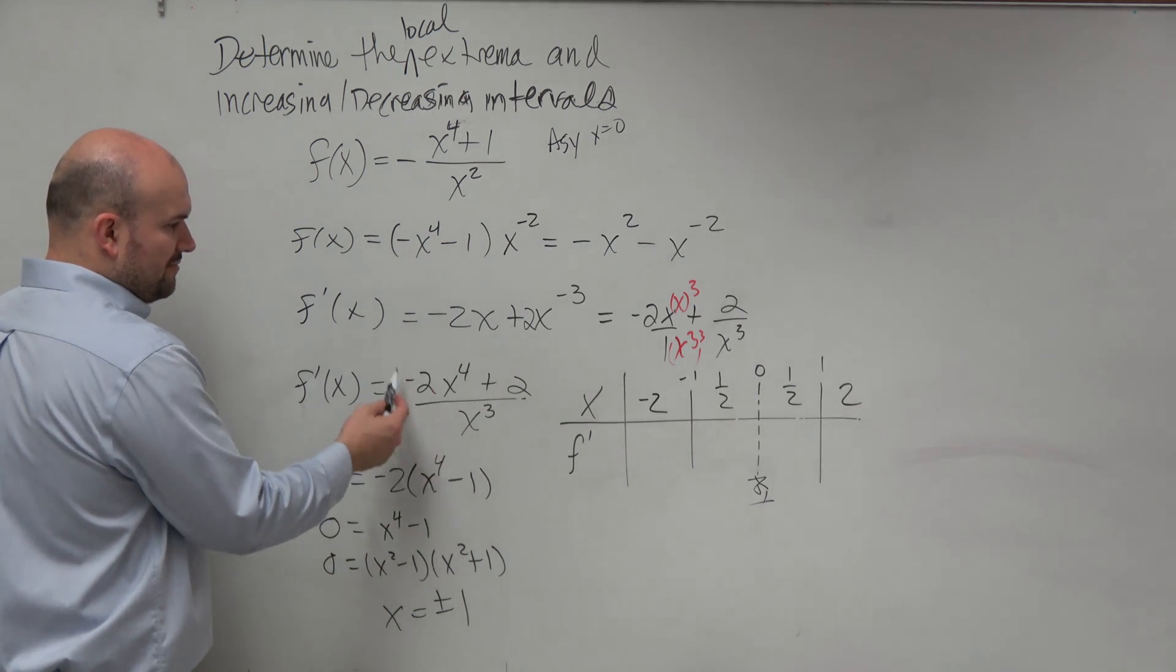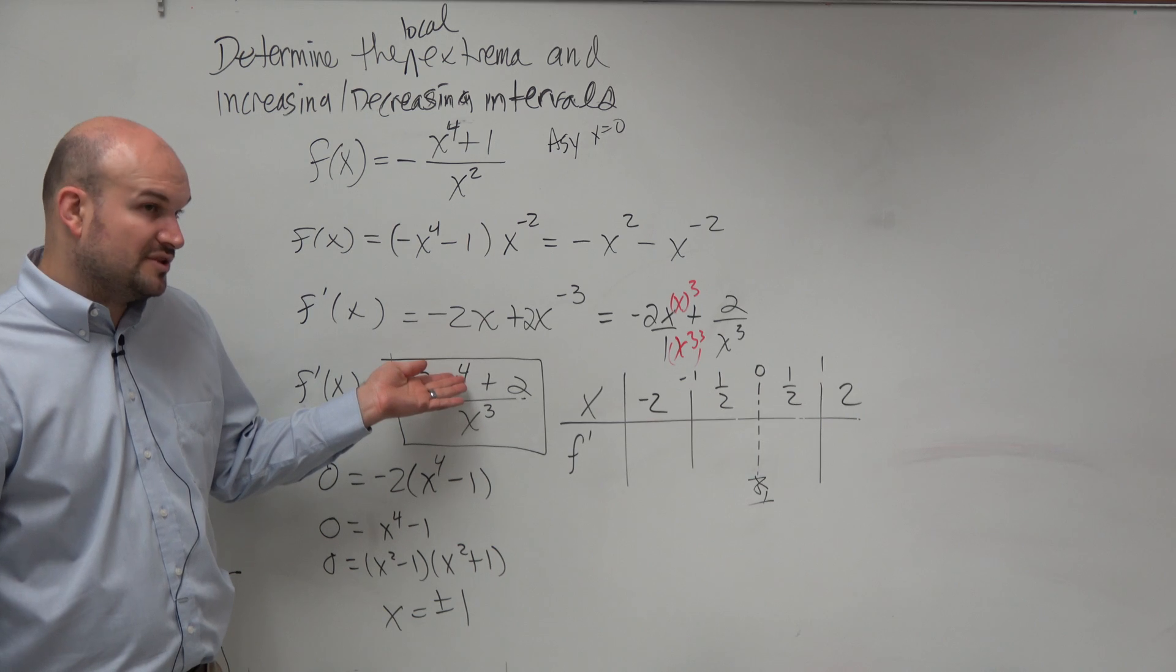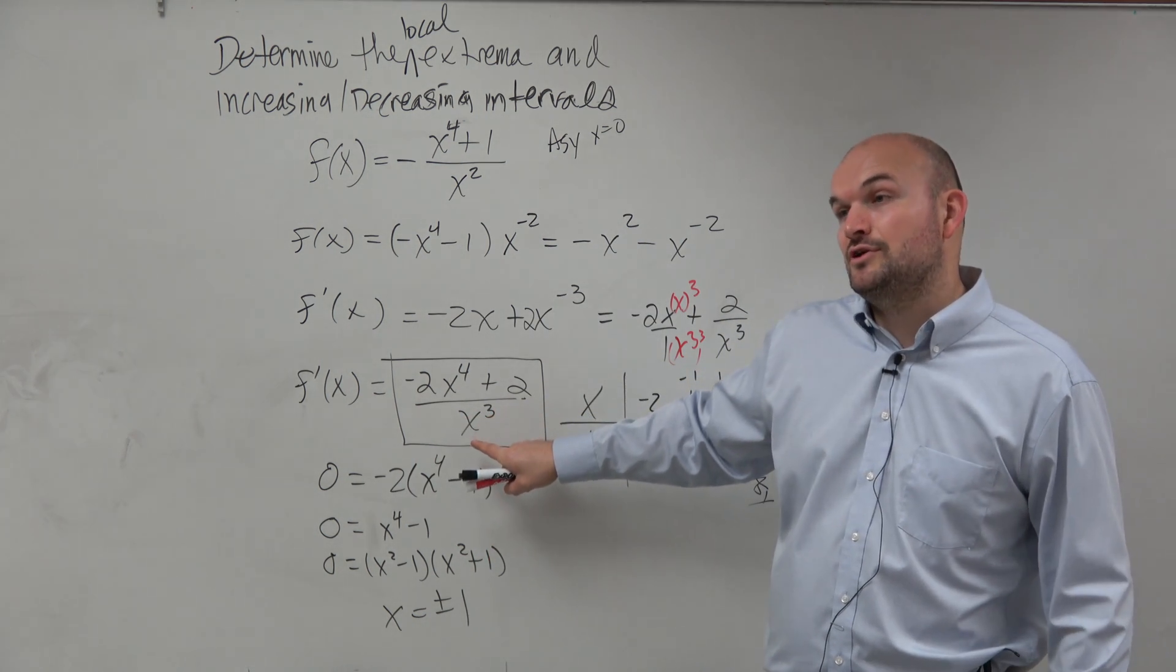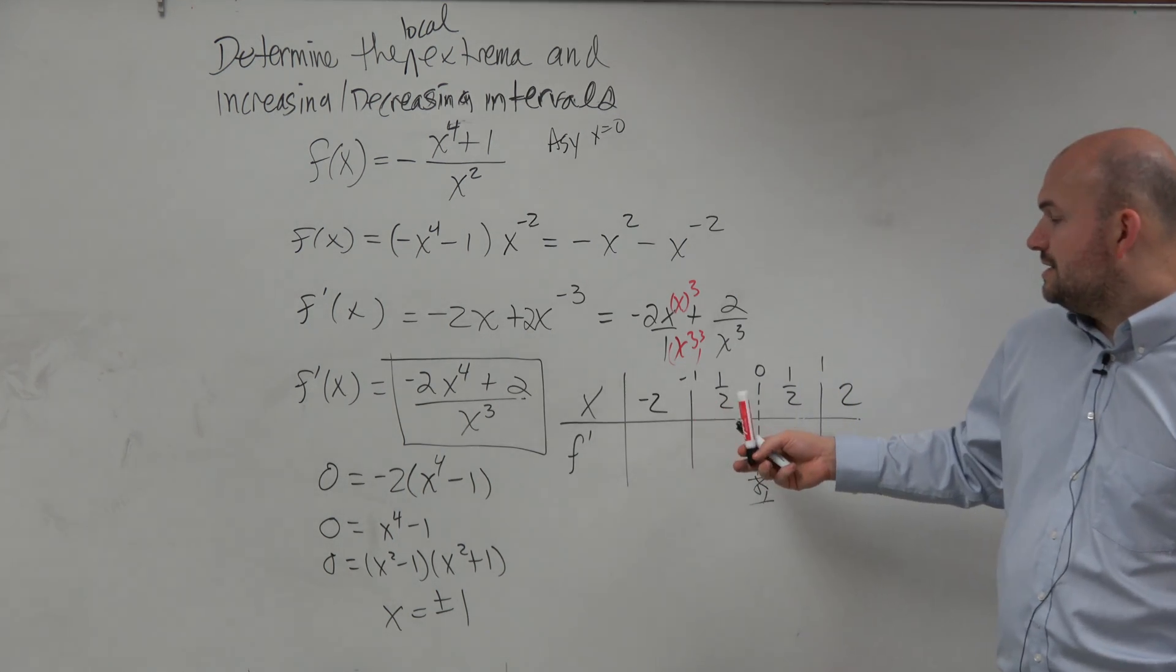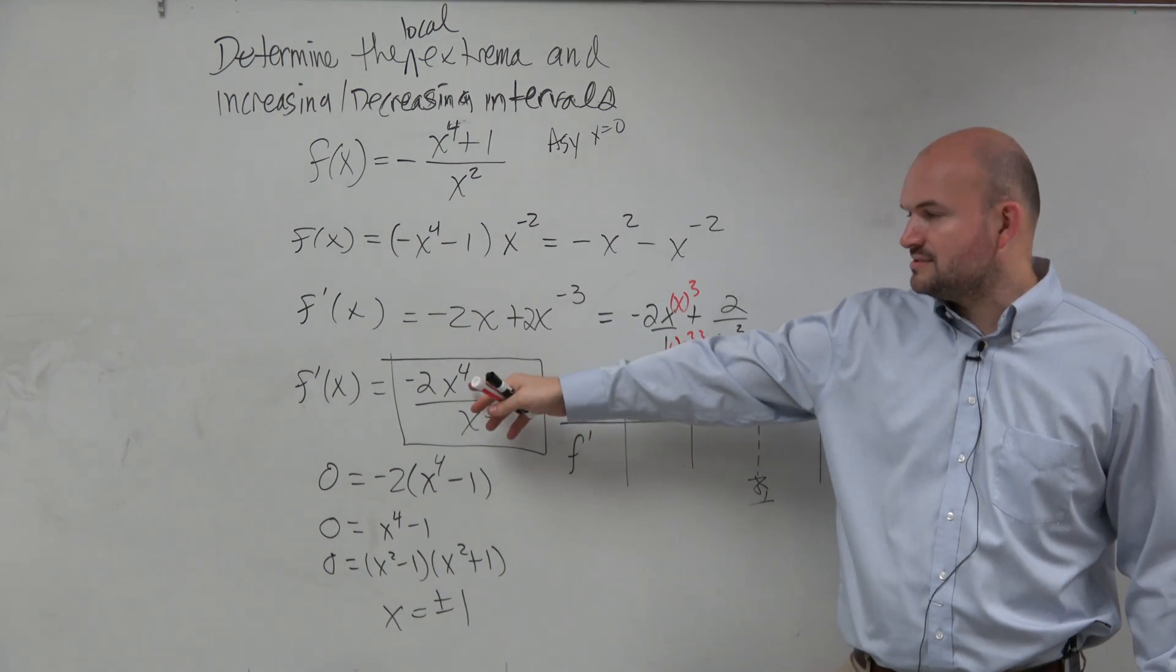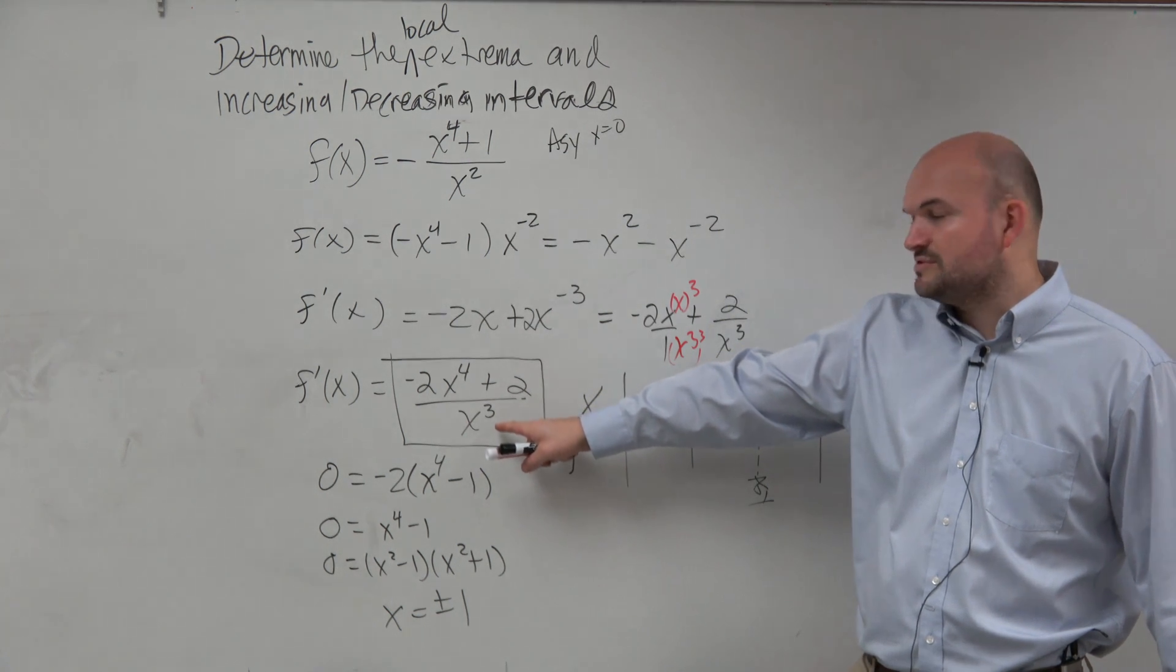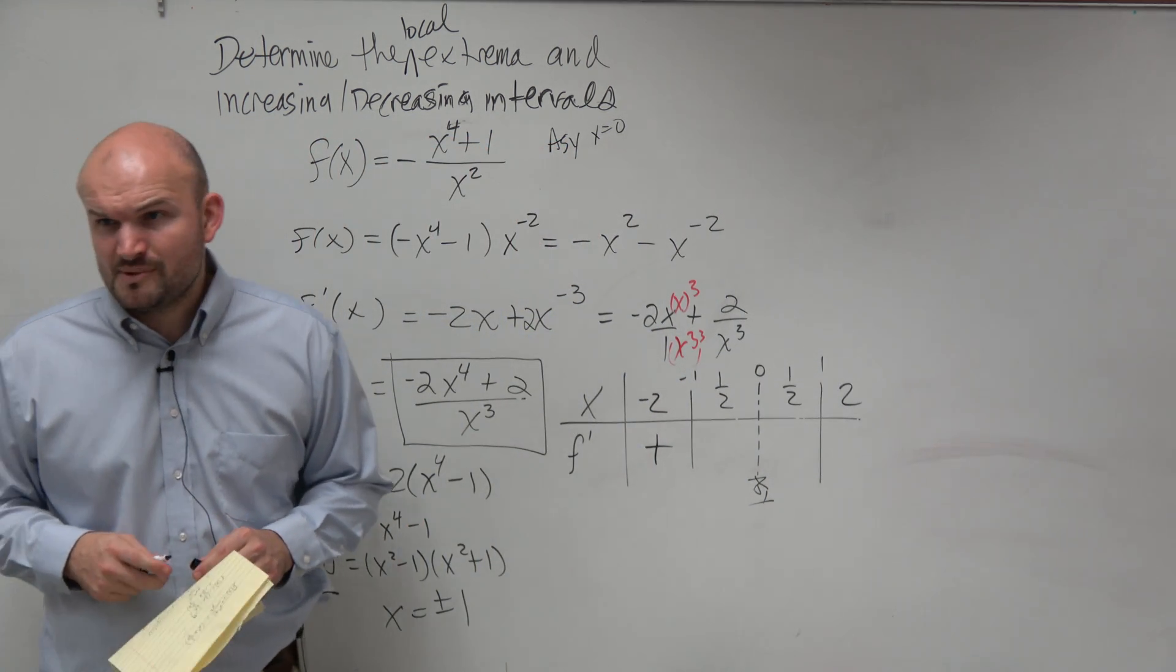Now the best thing to understand when you're plugging them into this function is understand when the sign is preserved or when the sign is not preserved. Any time you're taking a number, raising it to the even power, it's always going to be positive. But then we're always multiplying it by negative 2, so it's always going to be a negative value. And then anything to the third power is always going to preserve the sign. So let's do negative 2. When I plug in negative 2, I get a positive times a negative, which is a negative number, which is way larger than positive 2. You have a negative over a negative, which is positive.